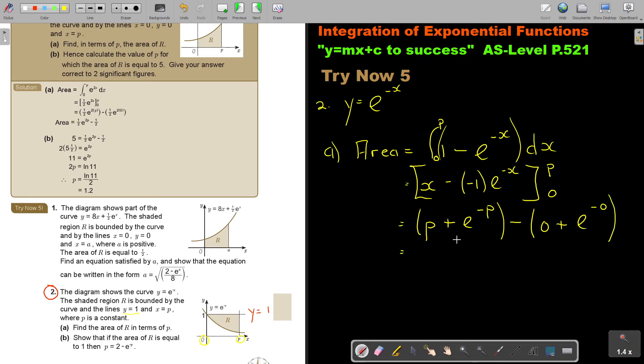So basically, I'm just going to say P plus E to the power negative P minus. But don't forget, anything to the power of 0, negative 0 is just 0, it's 1. So it's minus 1.